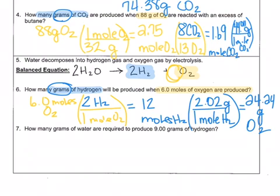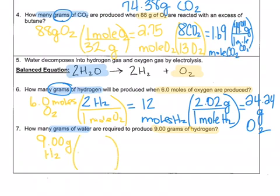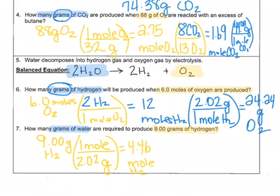The last problem asks: how many grams of water are required to produce 9 grams of hydrogen? I've highlighted what I'm given — 9.00 grams of hydrogen — and what I want to get to. My only way to get to water is to be in moles, so I convert grams to moles using the molar mass: 2.02 grams is 1 mole of hydrogen. That gives me 4.46 moles of hydrogen.